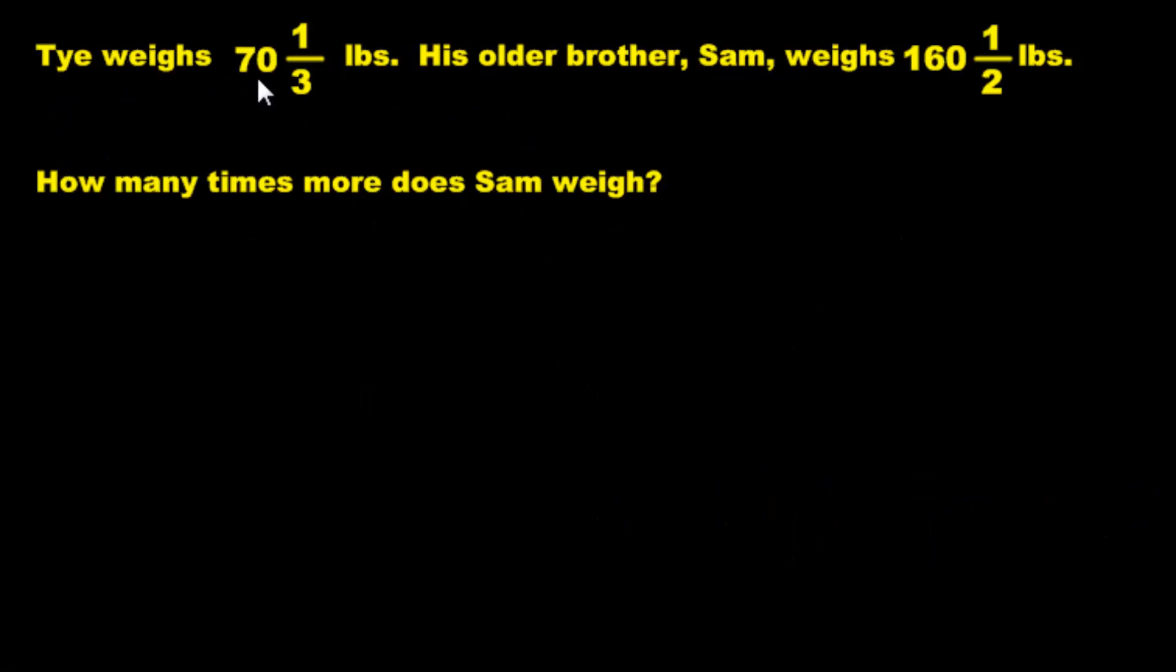Here's the second question. We have Tye weighs this many pounds. 70 and a third of a pound. His older brother Sam weighs 160½ pounds. How many times more does Sam weigh? How many times more does Sam weigh than Tye? Okay, what is being used here? How many times more? Great. What does that mean? What does that mean? Always. So now let's divide those numbers. We have 70⅓. We always take—actually wait, that's a mistake. We always take the big number first. If it says how many times more, how many times, you always use the big number first. Always. Sometimes? No, no, always.